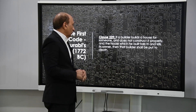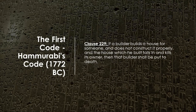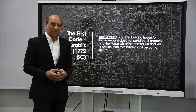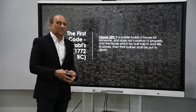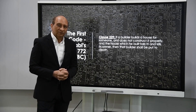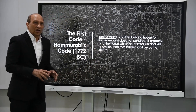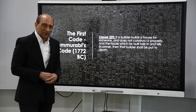Going back in history, around 1700 BC, there was a king called Hammurabi who was the first person to try to codify these things for the safety of people. One clause in his code states: if a builder builds a house for someone and does not construct it properly, and the house falls in and kills its owner, then that builder shall be put to death. So the builder was completely responsible for the safety of the structure — their own life was at stake.